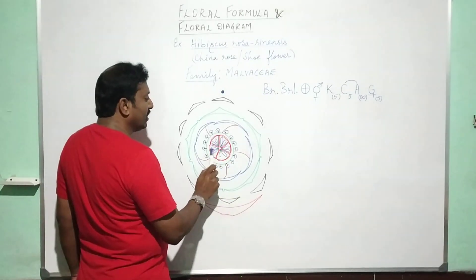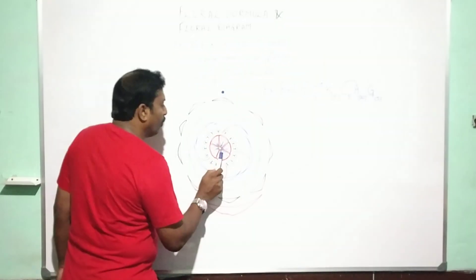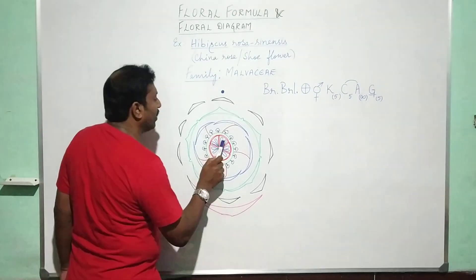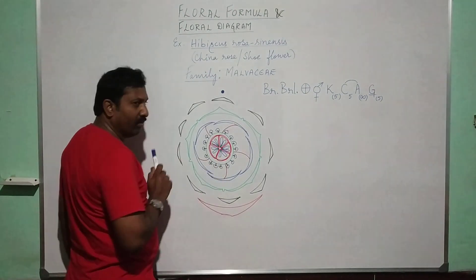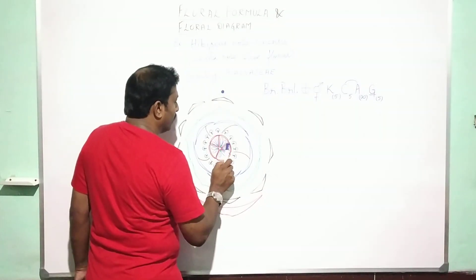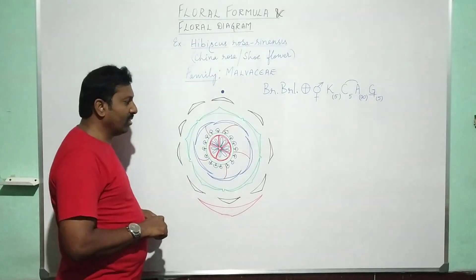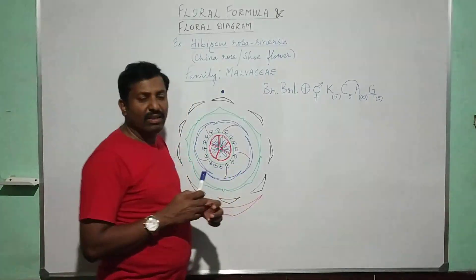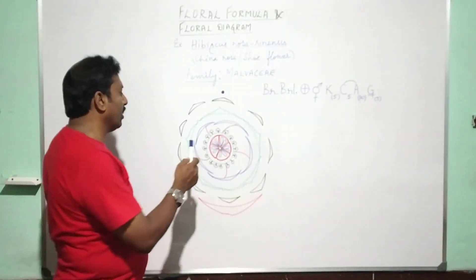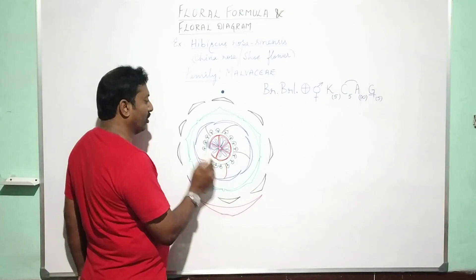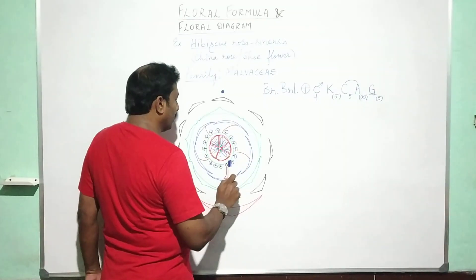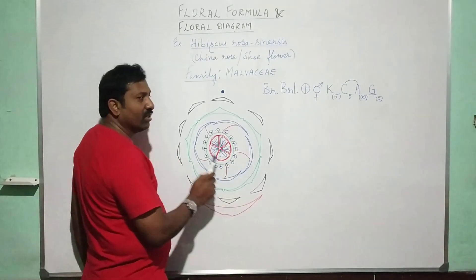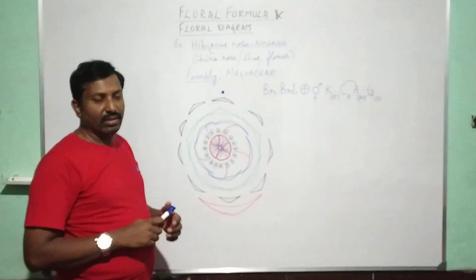The corolla has 5 petals and is slightly fused with the staminal tube. The ovary is pentacarpellary syncarpous superior with axile placentation. You can see the placenta in green color and the ovules represented in blue. There are 5 locules — that is why it is called pentalocularis — with two ovules in each locule.